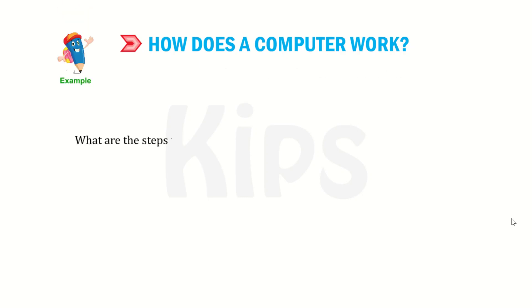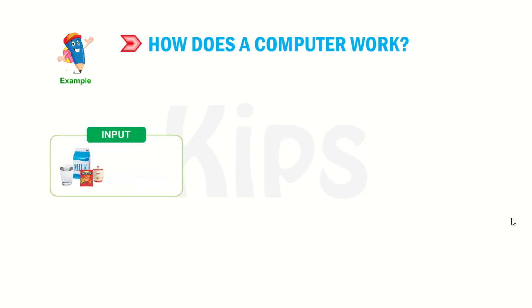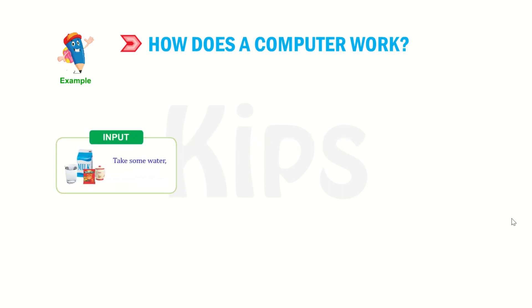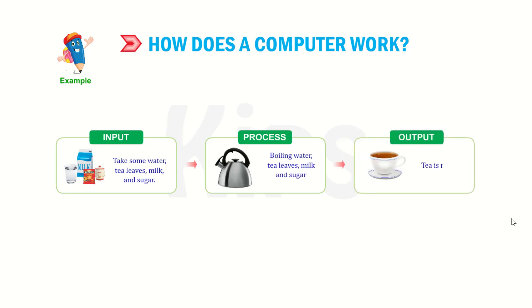What are the steps that your mother follows when she prepares a cup of tea? Look at the example given below. Take some water, tea leaves, milk and sugar as input. Boiling water, tea leaves, milk and sugar is processing. Tea is ready — that is the output.